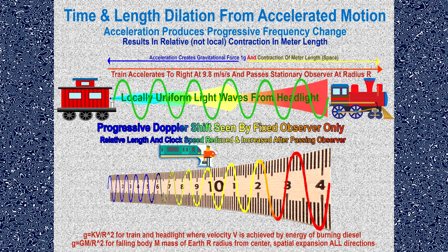Acceleration does cause length and time changes — a meter can change in length, or a second can change, at least relative to a non-moving or stationary body. Acceleration produces a cumulative point-to-point change in A's meter length and clock speed relative to B, due to the ongoing change in fractional frequency. The local definition of a meter requires that local measurements of time and space remain constant, but sustained acceleration towards an observer B progressively shrinks both time and space relative to the non-accelerating frame.